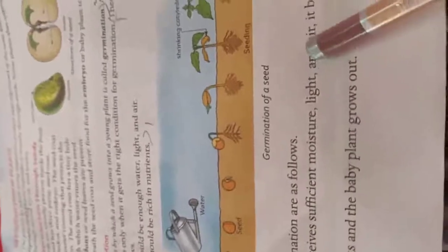Soil should be rich in nutrients. The stages of germination are as follows. When the seed receives sufficient moisture, light and air, it becomes soft and spongy. The seed coat breaks and the baby plant grows out.